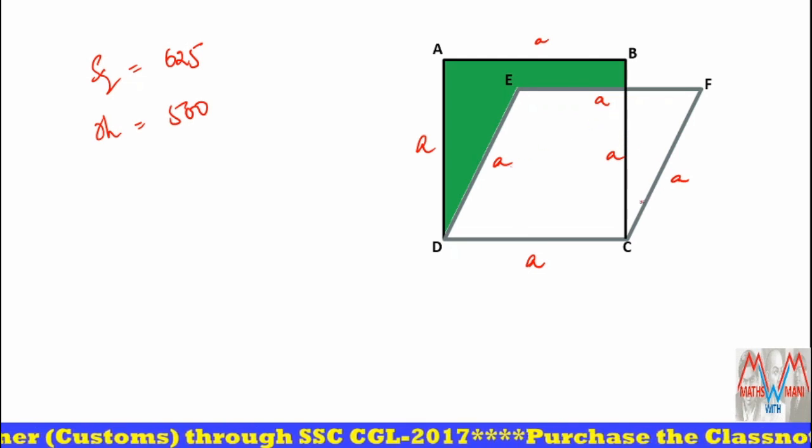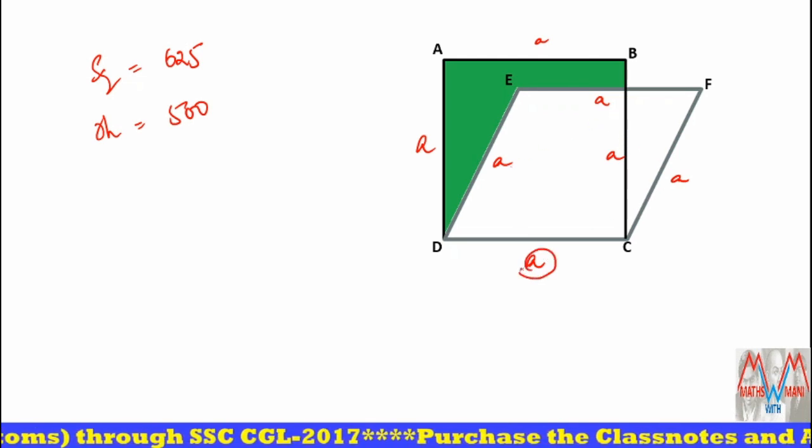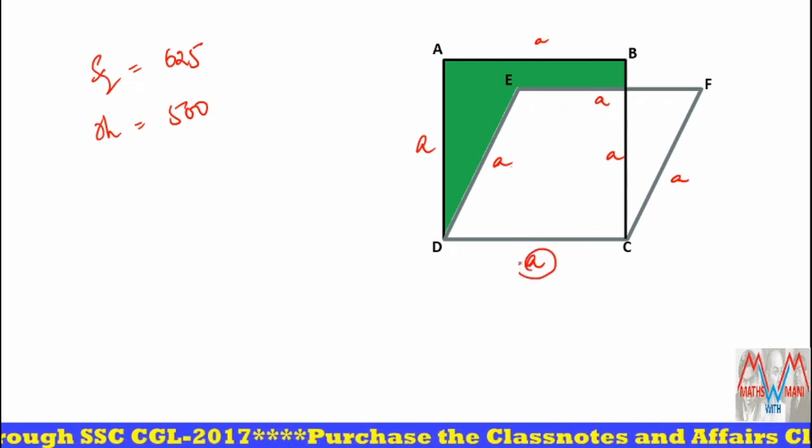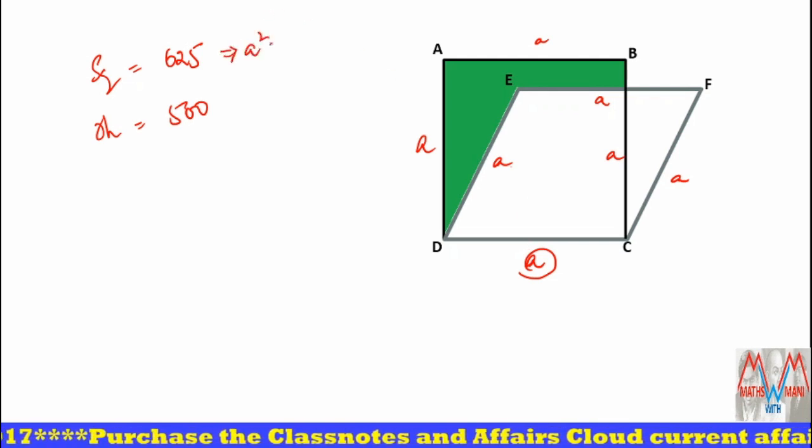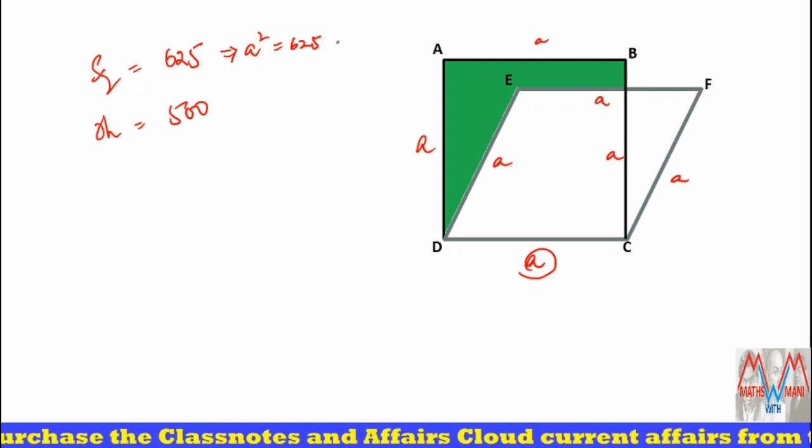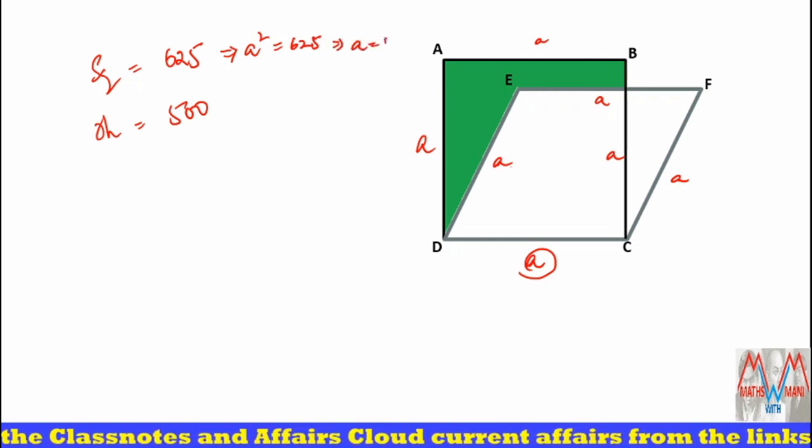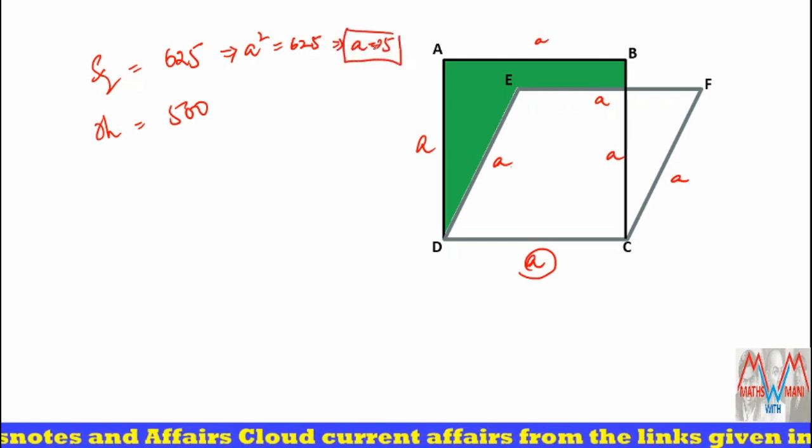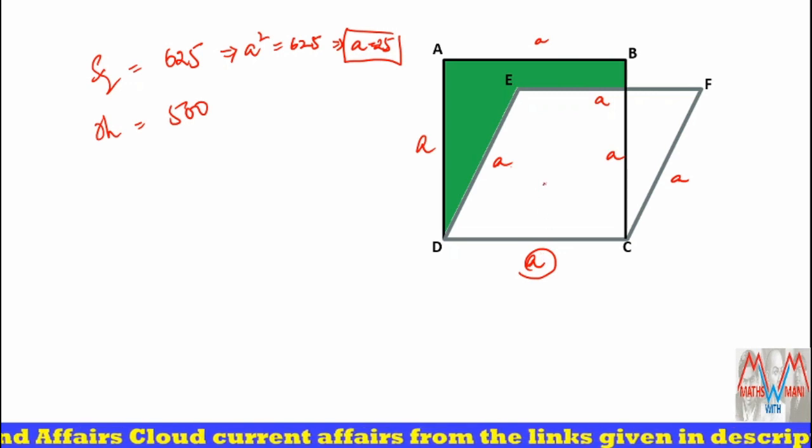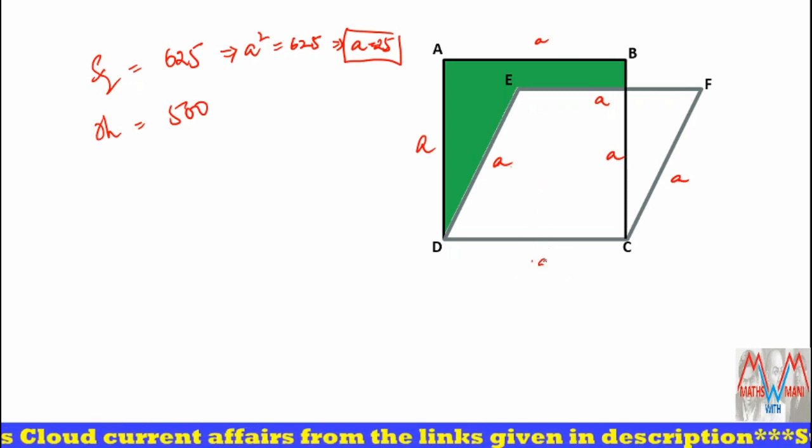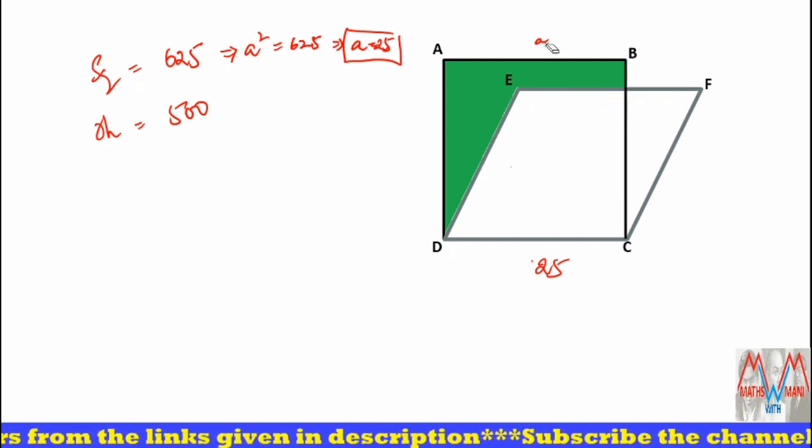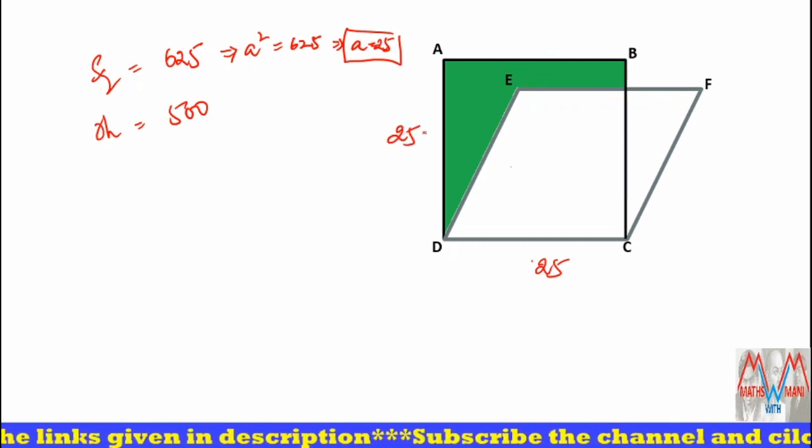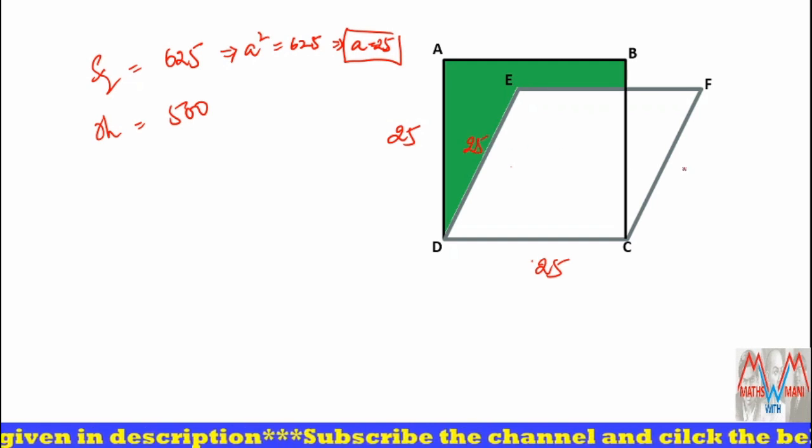Similarly in the rhombus, all the sides are a because the base of the rhombus and square is same. What is the area of the square? A square, it is equal to 625. So indirectly it has given that the side of the square and rhombus is 25. All the sides of the square and also rhombus is 25.